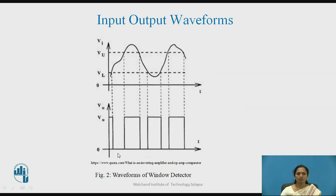Figure 2 shows the waveforms for the window detector. Whatever may be the shape of the waveform, it will look at the range of the window. In between VLT and VUT, output is logic low. If the input satisfies any out-of-range condition, it gives output as logic high. So when input is greater than VUT, output is logic 1, and when input is less than VLT, output is also logic 1.